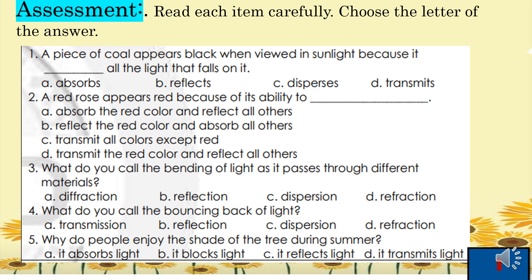Here are the answers for the assessment. Number one: a piece of coal absorbs all the light that falls on it — answer A, absorbs. Number two: a red rose appears red because of its ability to absorb the red color and reflect all others — answer A. Number three, bending of light — refraction. Number four, bouncing back of light — reflection. Number five, why people enjoy shade of a tree — answer B, it blocks light.